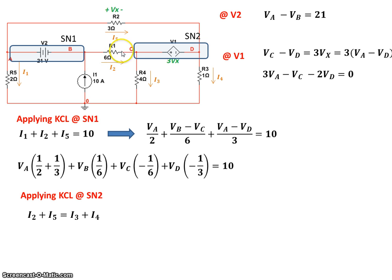Now I2 is VB minus VC divided by 6. I5 is VA minus VD divided by 3. Similarly, I3 is VC minus the reference node divided by 4. And I4 is VD minus the reference node, which is 0, divided by 1. So we have this expression right here. We want to similarly group all the coefficients of VA, VB, VC, and VD and write them as.